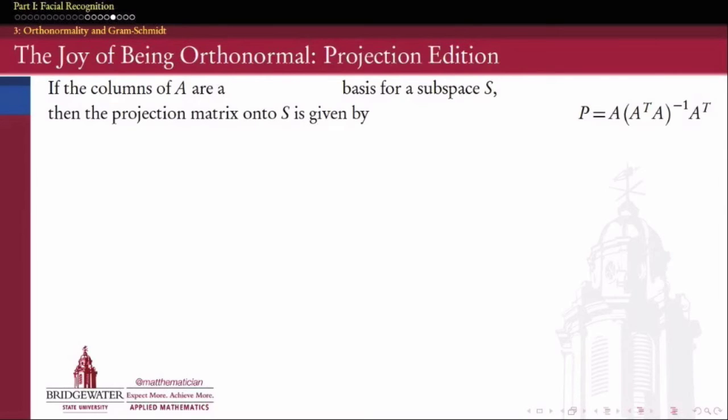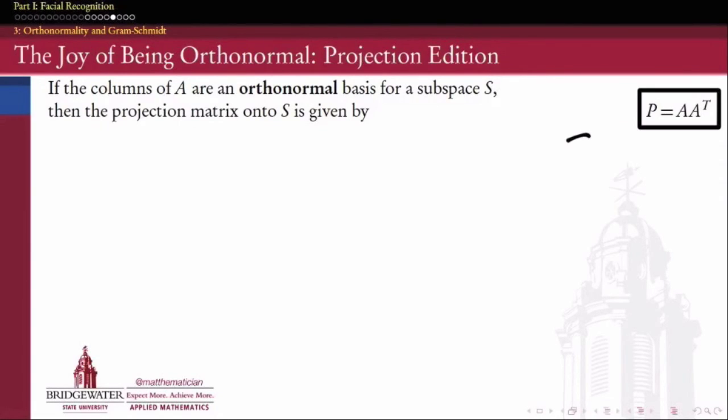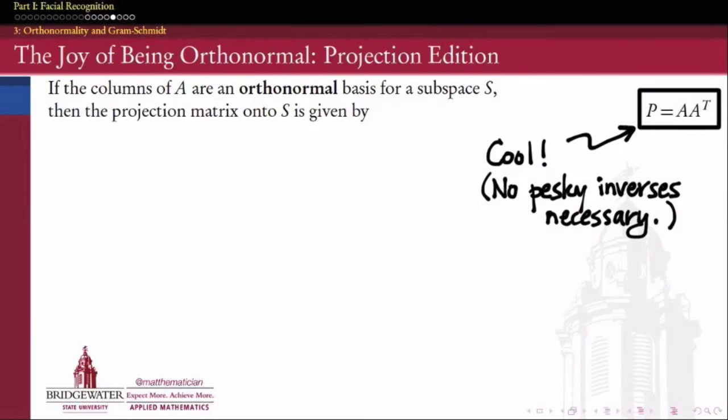So starting from the projection formula, we know. If the columns of a matrix A are a basis for a subspace S, then we can compute the projection matrix onto S using this formula, A times the inverse of A transpose A times A transpose. But if that basis is orthonormal, then according to what we just saw, A transpose times A, even though A is not a square matrix, A transpose A will be a square matrix. And namely, if its columns are orthonormal, it will give us the identity matrix. And if there's one matrix that's simple to invert in the world of linear algebra, it's the identity matrix. The identity matrix is its own inverse. And so the formula for projection becomes merely A times A transpose. And isn't that nice? We don't have to compute any pesky inverses. If we choose an orthonormal basis for our subspace S and make that orthonormal basis the columns of A, then all we have to do to compute the projection matrix onto that subspace is to take A, multiply it by A transpose, and we're done.